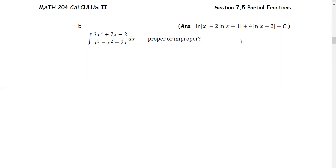In this example, we have the integral of 3x squared plus 7x minus 2 divided by x to the third minus x squared minus 2x, which is a rational function. The first question is: is this a proper or improper fraction? The answer is proper, because the degree of the numerator is less than the degree of the denominator.